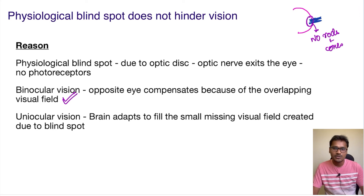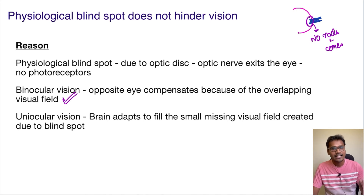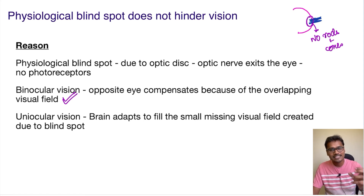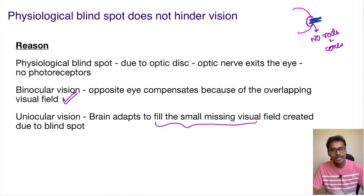But now, close your one eye and see. Suppose if I close my one eye, I will still not be able to see a blind spot in my visual field. How does it happen? This is very fascinating because the brain has the tendency to adapt and cover up the image in this blind spot region, so that there is no area of missing image formation even with uniocular vision. This is the brain's capability to adapt and fill this small missing visual field created by the blind spot.